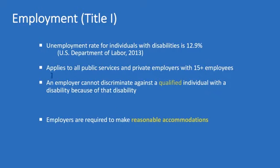The employment title tells us that an employer cannot discriminate against someone who is qualified for a job because of their disability. A qualified individual is one who meets the key qualifications of the job as long as they're provided a reasonable accommodation. If someone has all the education and certifications necessary and great experience, they cannot be discriminated against because of their disability. The goal for the organization should be to hire the most qualified person regardless of whether or not they have to provide an accommodation. Employment covers all aspects — not just hiring, but also whether someone is fired, gets a promotion, or gets a raise.